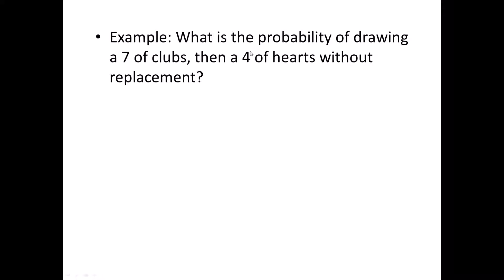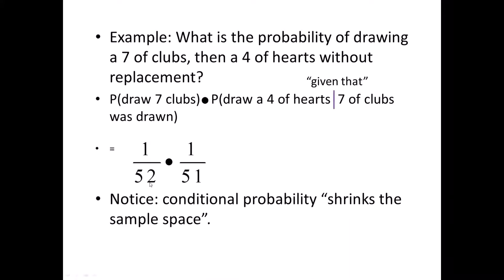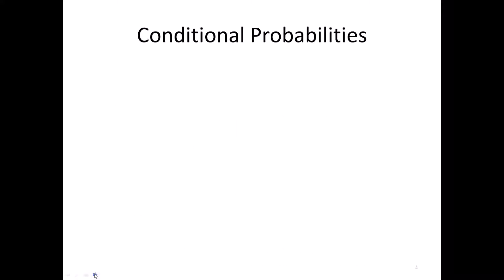Back to the original problem: what is the probability of drawing a seven of clubs and then a four of hearts without replacement? 'And' means to multiply. This is going to be out of 52 cards for the first draw and out of 51 for the second — so the probability of drawing a seven of clubs times the probability of drawing a four of hearts given that the seven of clubs was drawn: 1/52 times 1/51. Conditional probability inevitably shrinks your sample space.